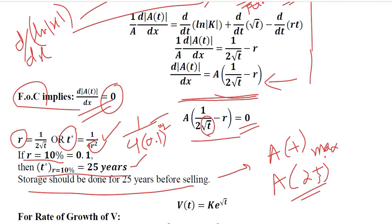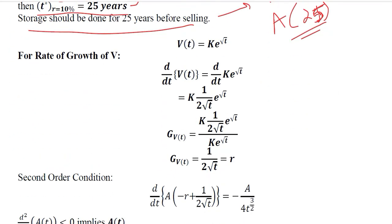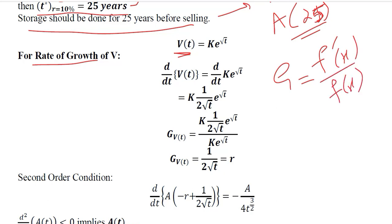Knowing how much time is required for maximization of wine's value is useful information. However, another question is how the value of wine increases over time — that is, what sort of growth rate exists for v(t). For that we use the growth rate formula, in which we write the derivative of the function in the numerator and the function itself in the denominator. We apply this formula using v(t) in the denominator.